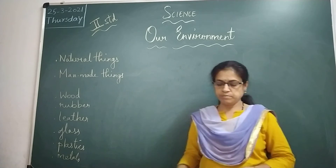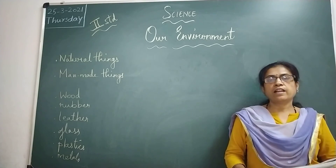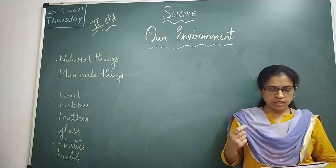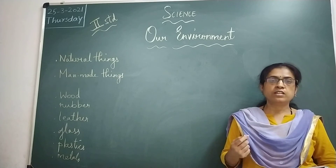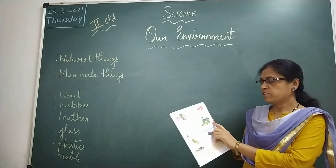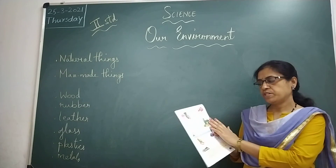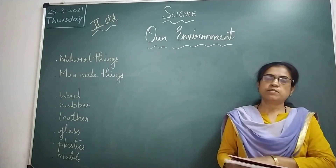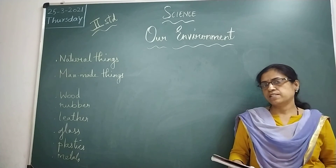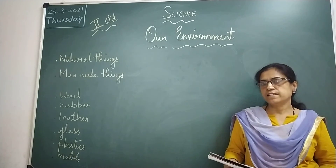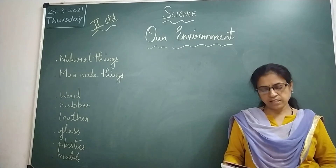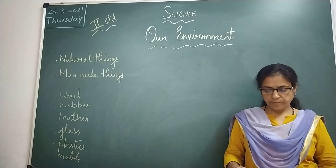And last, metals. Metals like iron and aluminium are used to make coins, utensils, and machines. Some other metals like gold and silver are used to make jewellery.